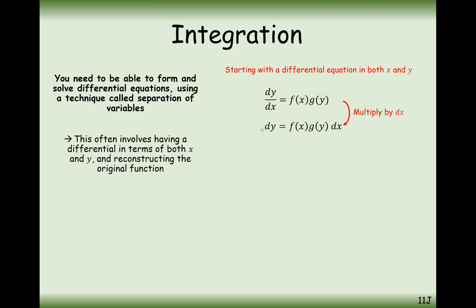The next thing we need to do is move all of the y terms onto the left hand side. At the moment all three terms are being multiplied together, so to get rid of times by g of y we divide by g of y. Effectively in two steps we have moved all the y's onto the left hand side and all the x's onto the right hand side. We always want the x terms on the right hand side and the y terms on the left hand side — that's how we solve this differential equation.